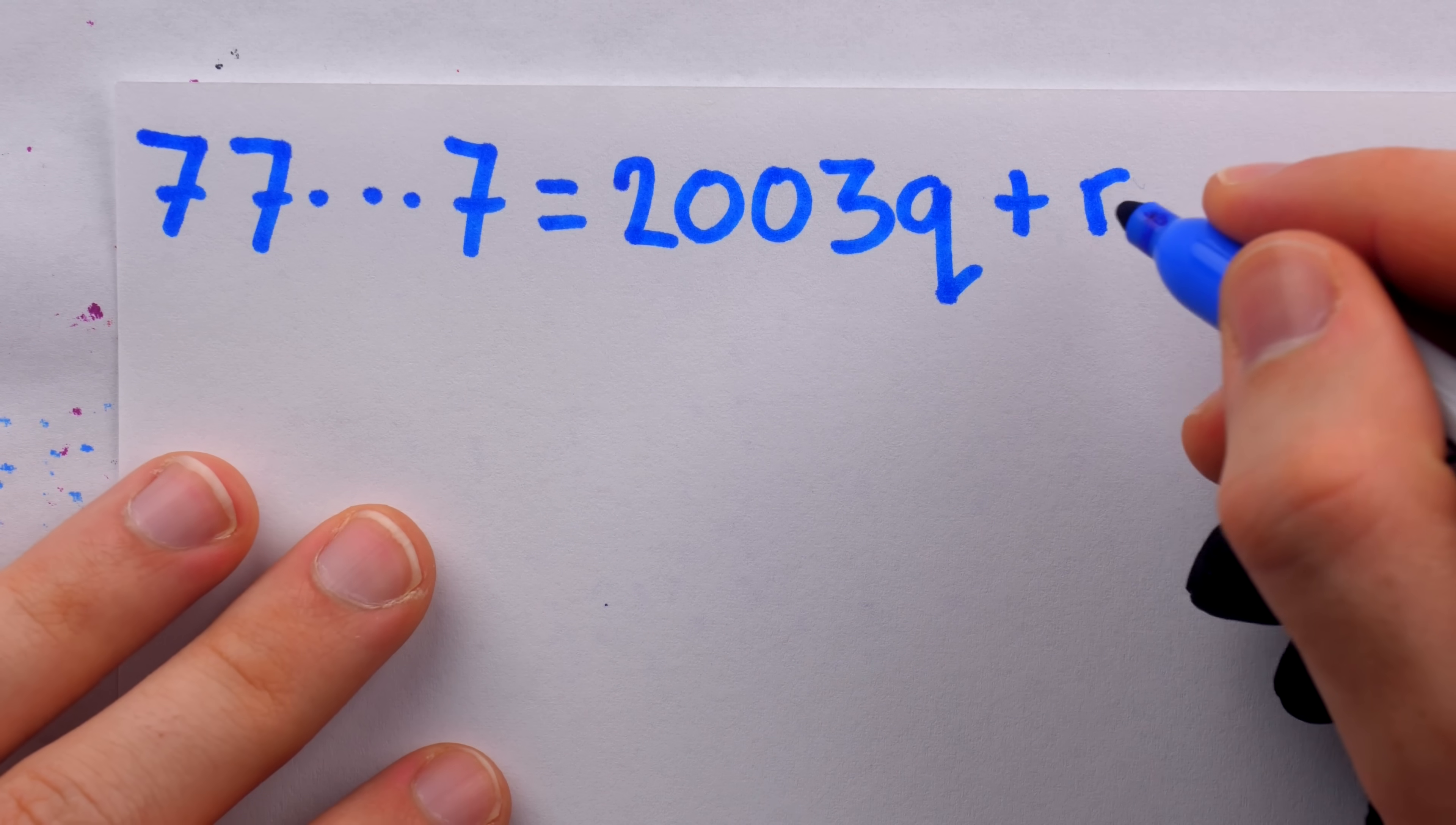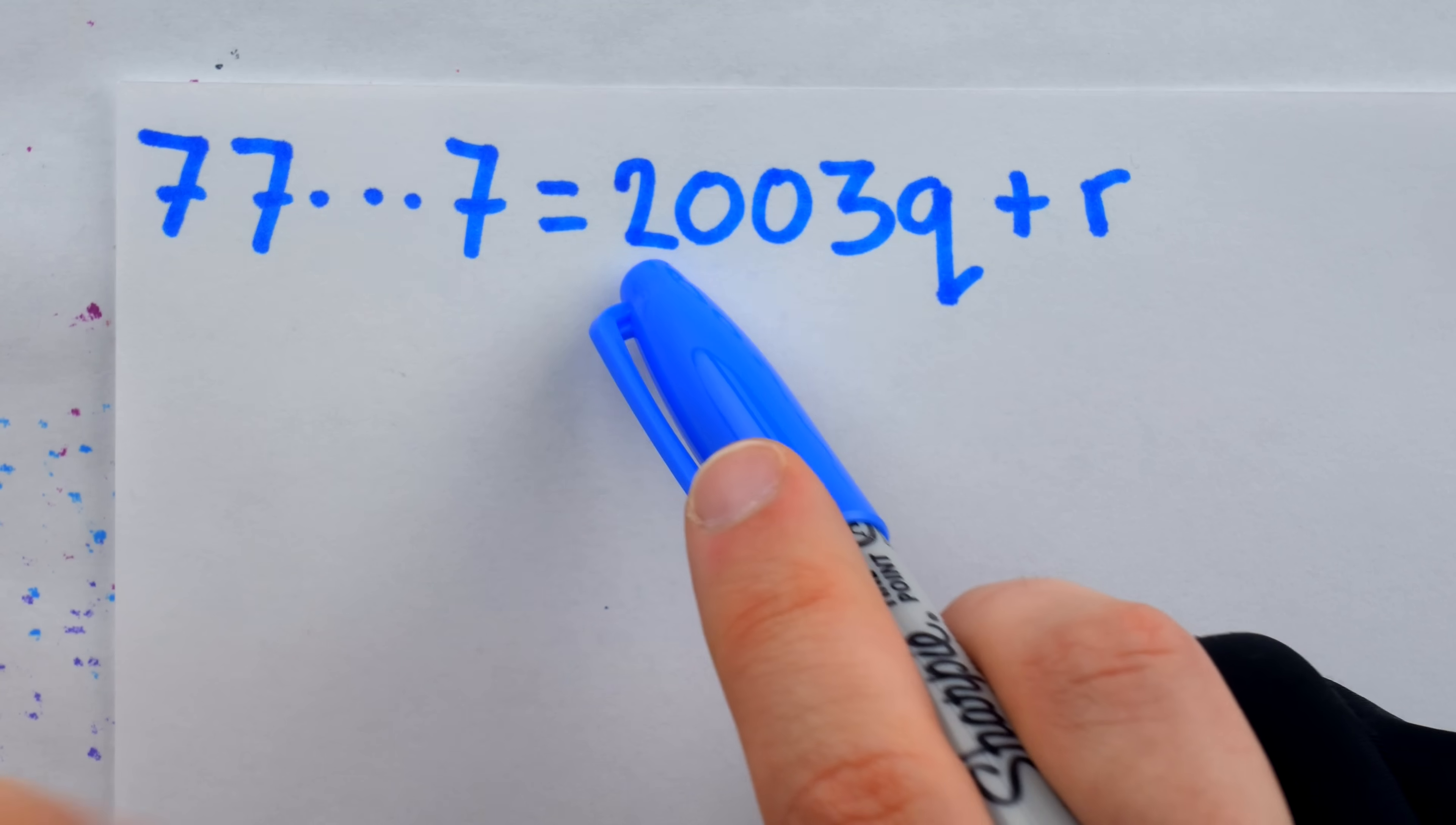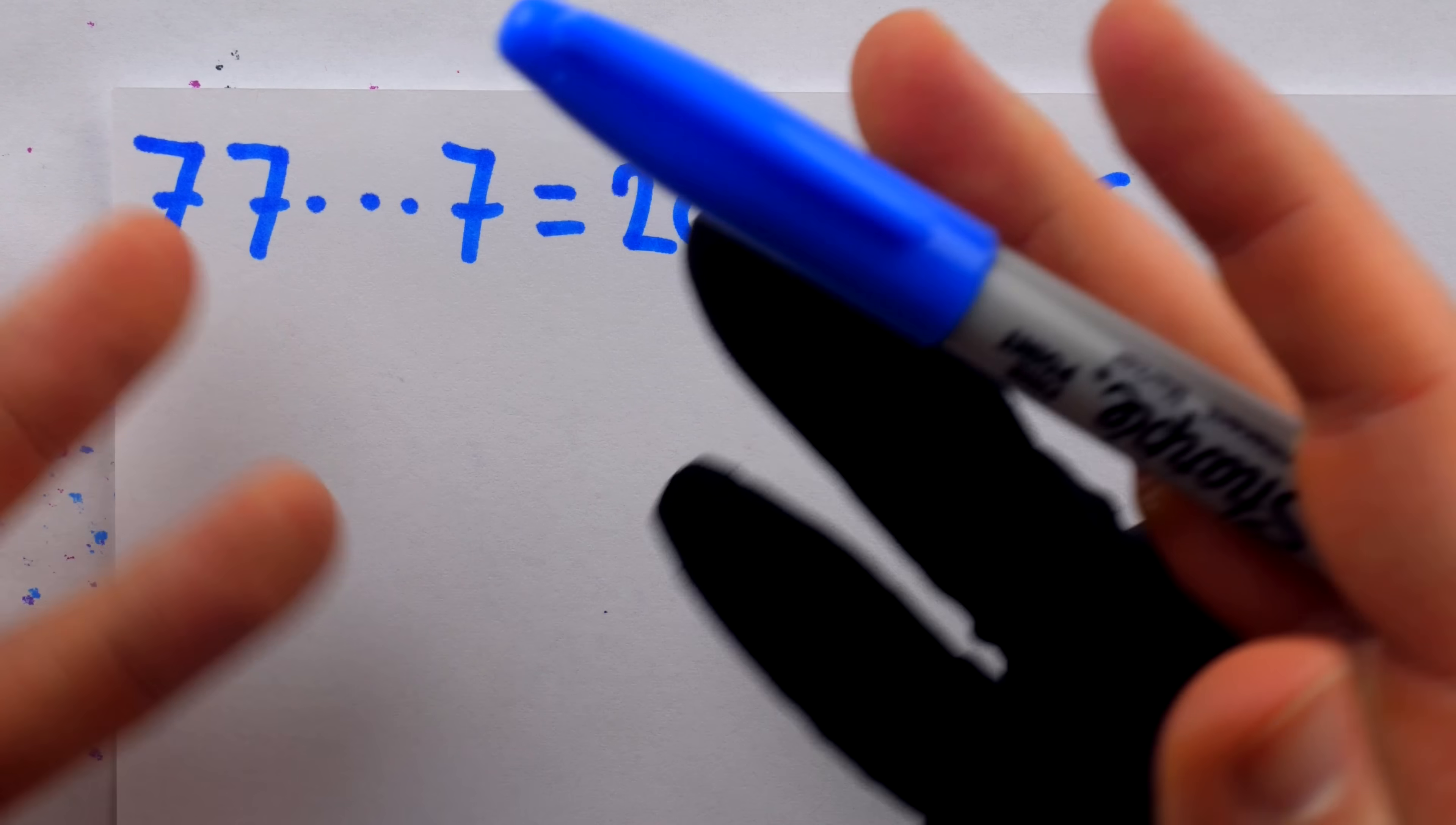Back to the sevens, though, what could the remainder possibly be? Well, it could be 0. But in that case, we would be done the proof, because then this term would be divisible by 2003. If we have no remainder, then this number is divisible by 2003, and we're done.